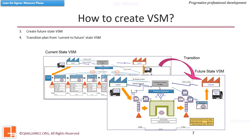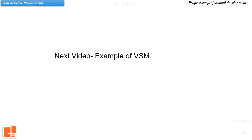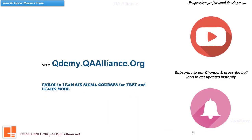Once the improvement areas are visible, a future VSM is created. Transition planning is also done, which helps in changing the current state into the improved state as desired and documented in the future value stream map. Thank you.